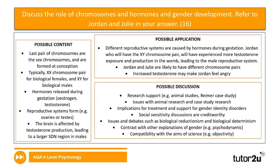For AO3 discussion on chromosomes and hormones: discuss means giving both strengths and weaknesses. Research support or contradictory support, issues of animal research into this topic, case studies and generalisability, implications for treatment of gender identity disorders or atypical development, social sensitivity, and the argument that this is biologically reductionist and biologically deterministic. Conversely, because this explanation is biological, it does adhere to scientific rigour in terms of objectivity. Your AO3 is worth six marks — aim for two PEEL evaluation points.